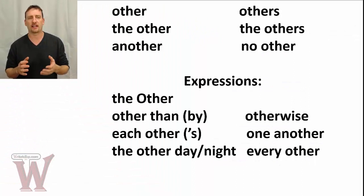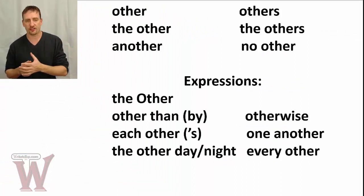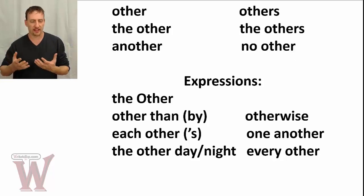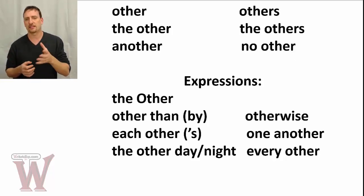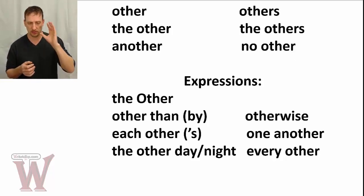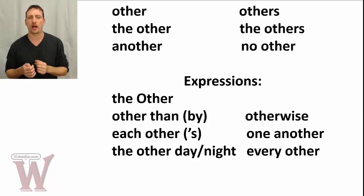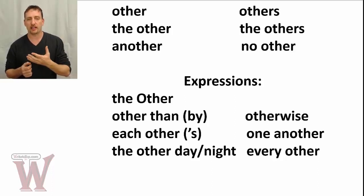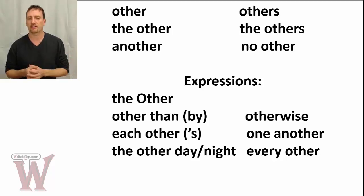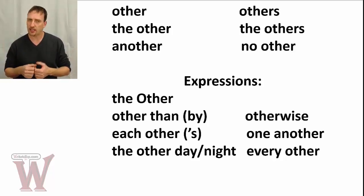The words we're going to look at are: other, others, the other, the others, another, no other — for the negative form. And some expressions: the Other with a capital O, other than or other than by, otherwise, each other, one another, the other day, the other night, every other.